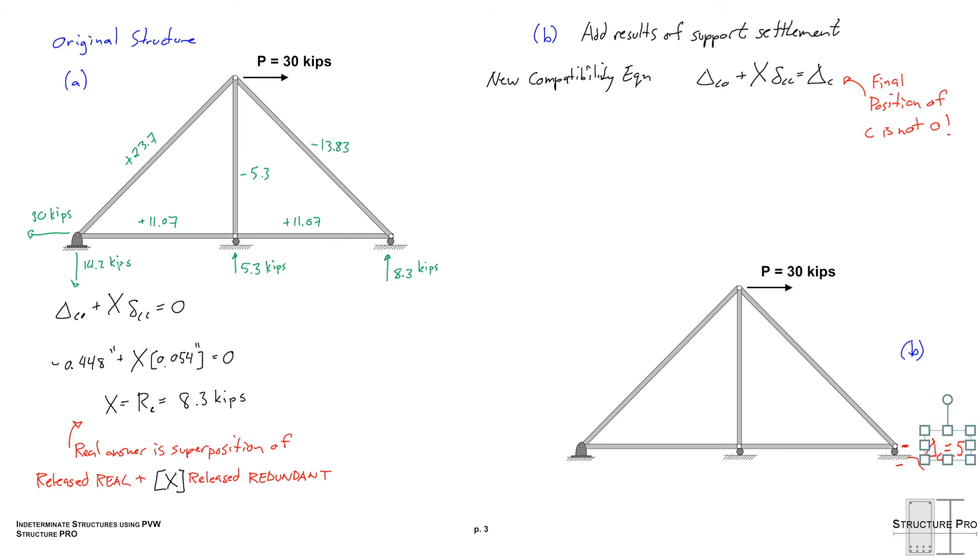So when you have a support settlement at the redundant that you've chosen that's going to appear right here on the right side of your compatibility equation. And this is different than the settlement at a different support which you haven't chosen as redundant. For example the settlement at B being one inch that has to come into play somewhere else. So we need to go back to the time when we solved for delta C0 because we essentially have an extra load here, an additional real load. Okay not just the 30 kip load but we also have a support settlement and that's just like another real load that we have. And that shows up on the left side of the principle of virtual work equation when you have the sum of all the Q delta P's.